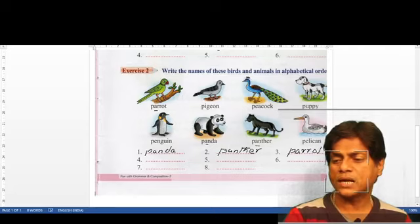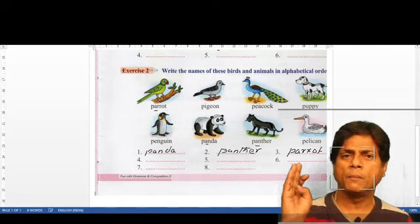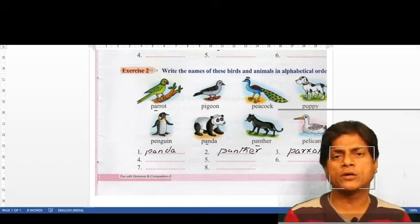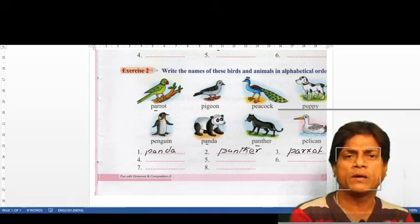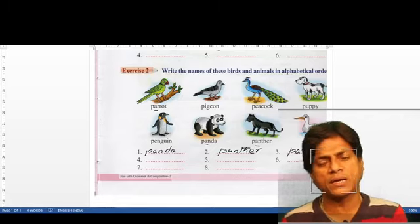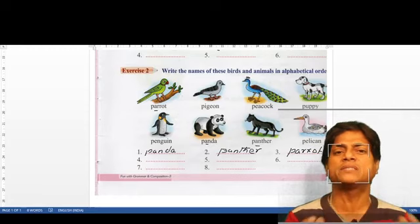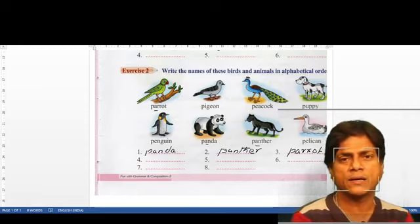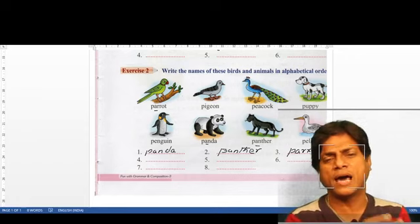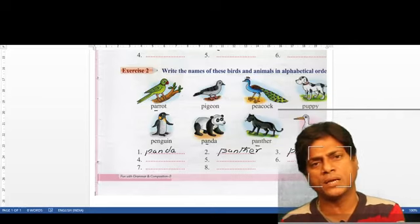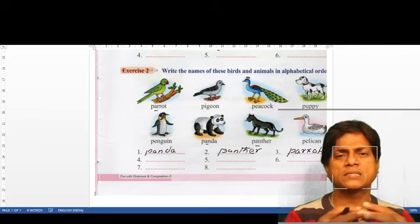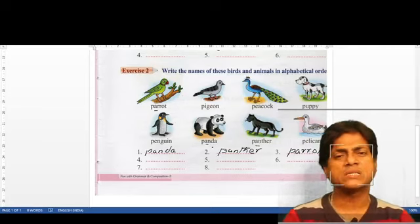So in this way, the remaining exercises you have to solve. First look at the first alphabet. If the first alphabet is the same, then look at the second alphabet. Whichever word's second alphabet comes first, write that first. If two words have the same second alphabet, then go to the third alphabet. If the third alphabet is the same, then go to the fourth alphabet. This is your homework.